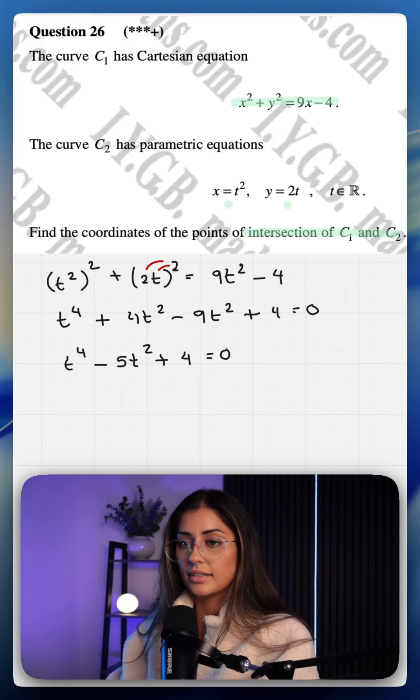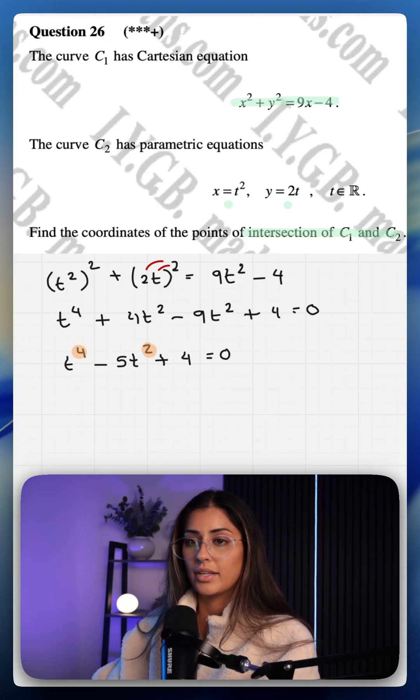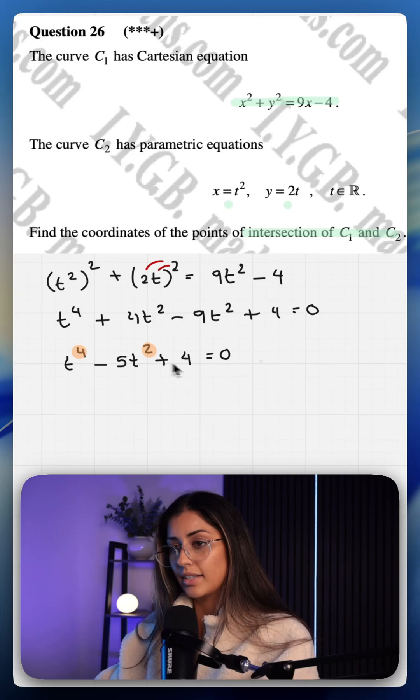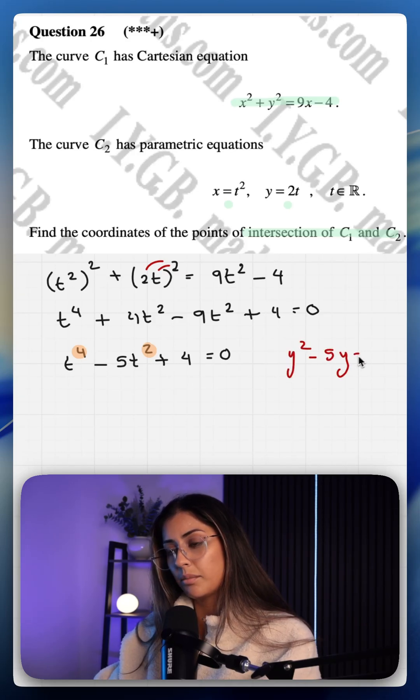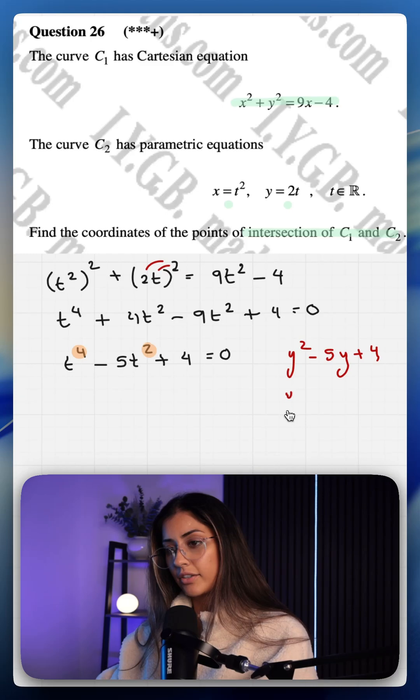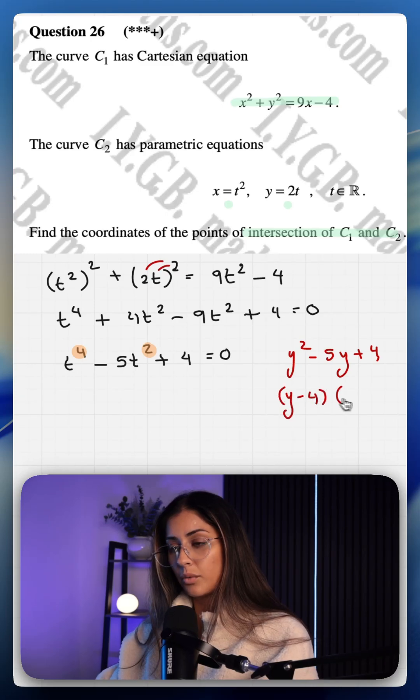If it helps you can see here that this is a hidden quadratic because we have one power that's double the other. So you can visualize this as y squared minus 5y plus 4 if it helps. That factorizes to y minus 4, y minus 1.